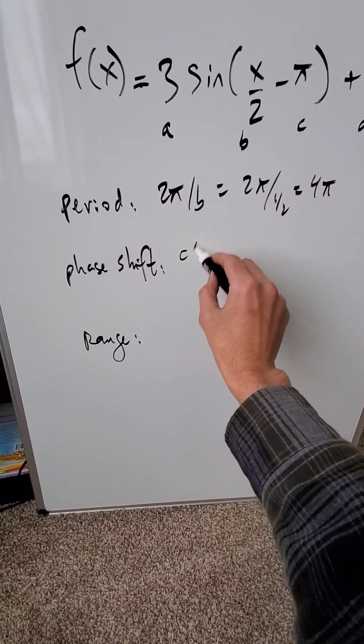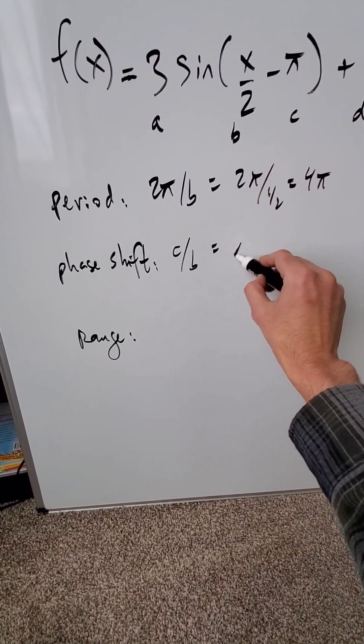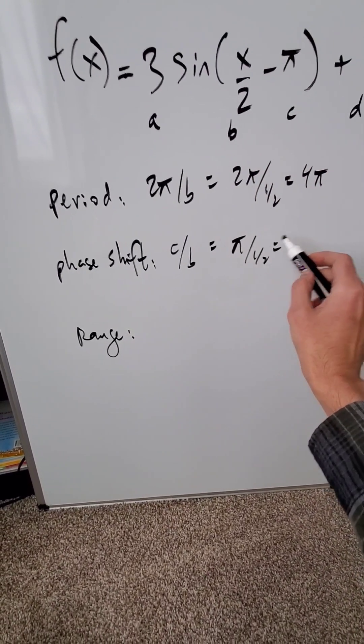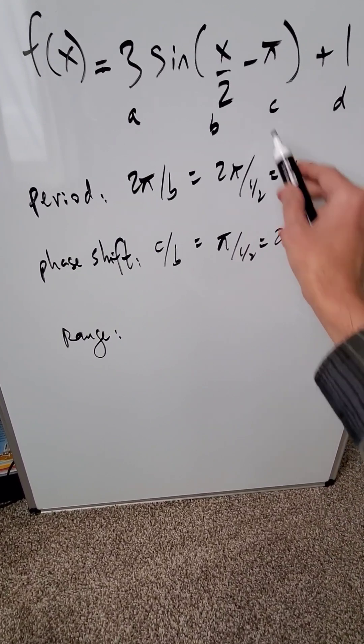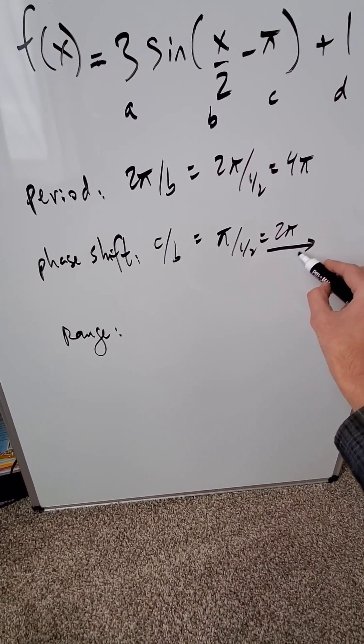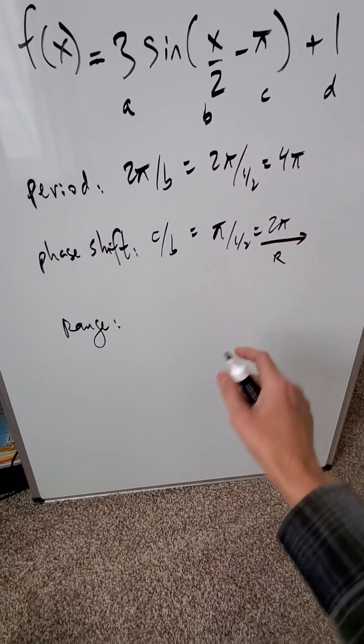The phase shift comes from the formula c over b. My c value here is a pi. My b value is 1 over 2. When you compute this, you're getting a 2 pi. The minus here indicates everything is shifted to the right by 2 pi units.